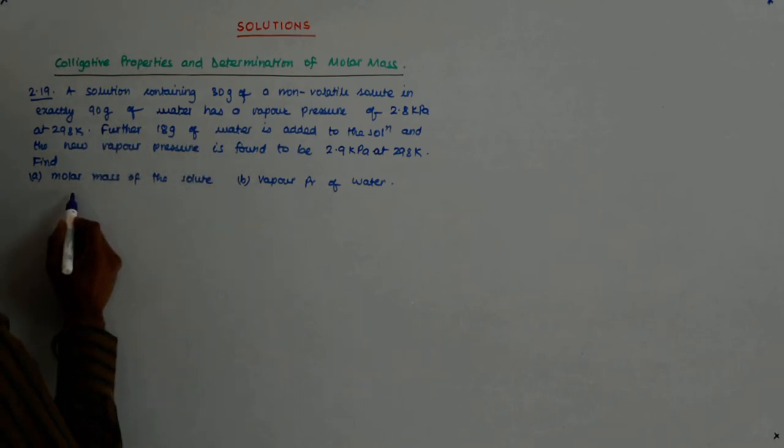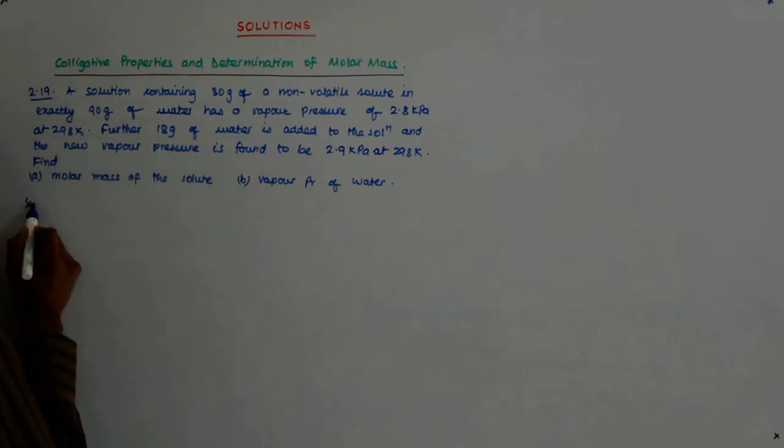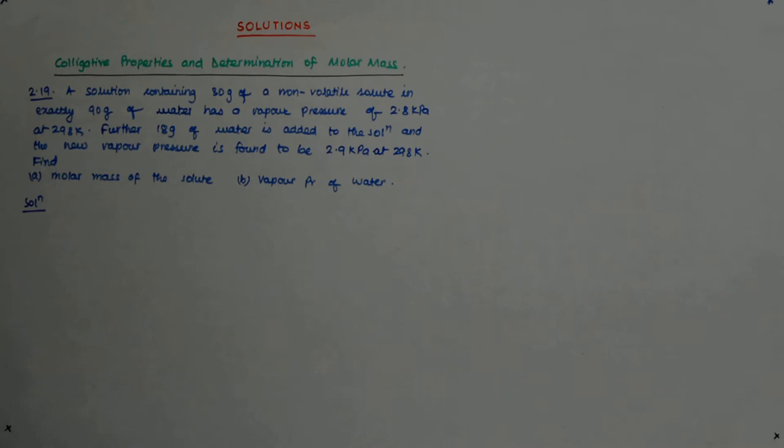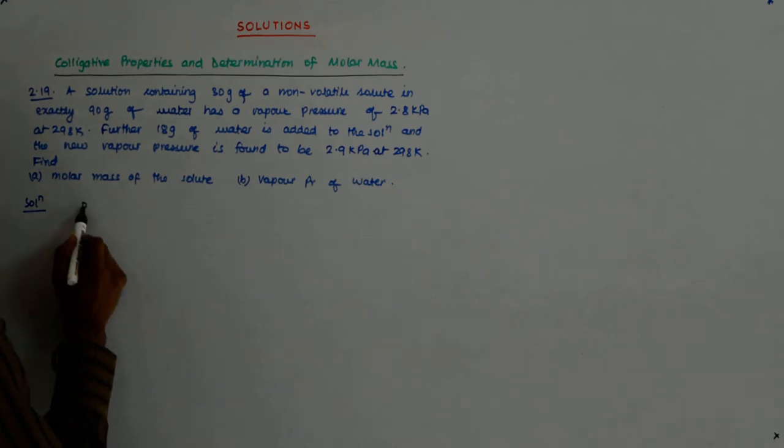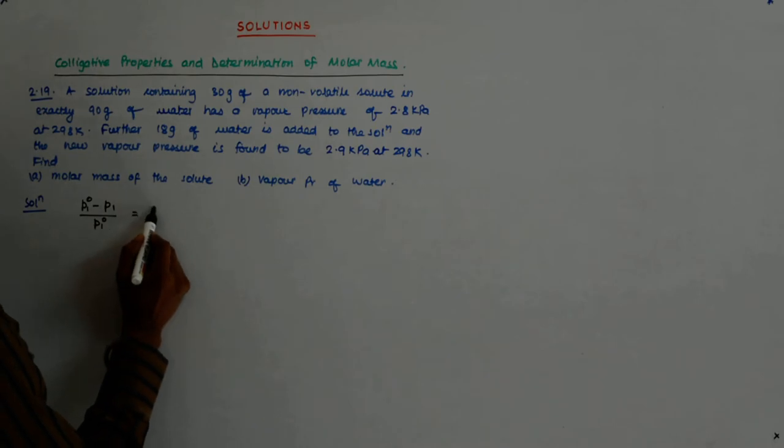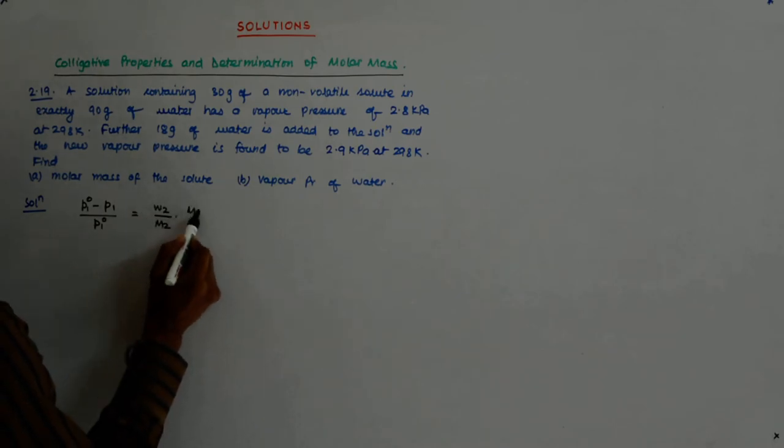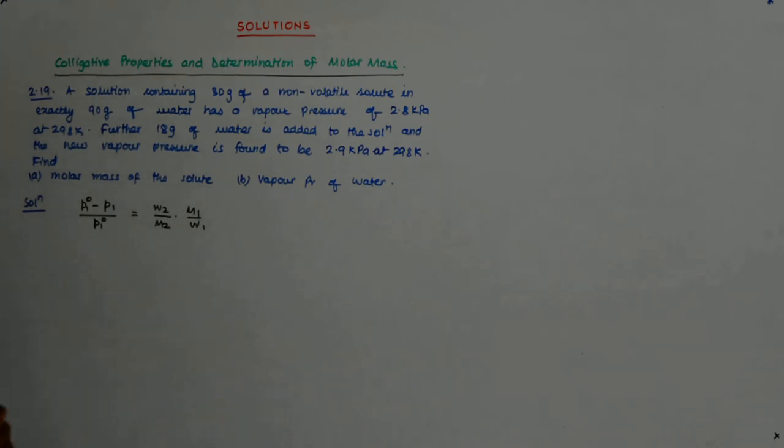So initially we put in... how do I solve that? What is the fundamental I will utilize? The same, the relative lowering, right, is equal to W2 upon M2 into M1 upon W1, is it not?